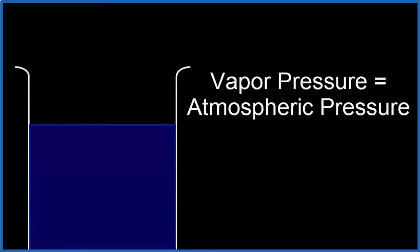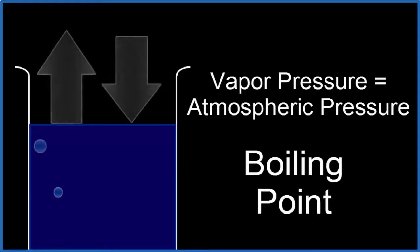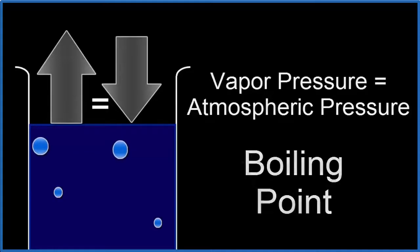We can make boiling happen by either increasing the vapor pressure or decreasing the atmospheric pressure. Either way, once the vapor pressure and the atmospheric pressure are equal, we've reached the boiling point, and boiling can begin.